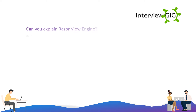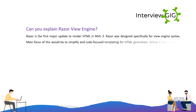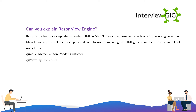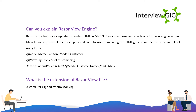Can you explain the Razor view engine? Razor is the first major update to render HTML in MVC 3. Razor was designed specifically for view engine syntax. The main focus is to simplify and code-focus templating for HTML generation. Below is a sample of using Razor: @model MVCMusicStore.Models.Customer, @ViewBag.Title = 'Get Customers', div class='custom' @model.CustomerName. What is the extension of a Razor view file? .cshtml for C#, and .vbhtml for VB.